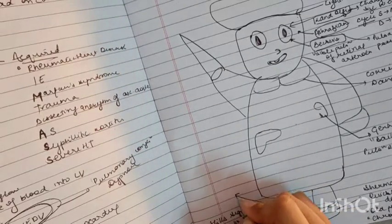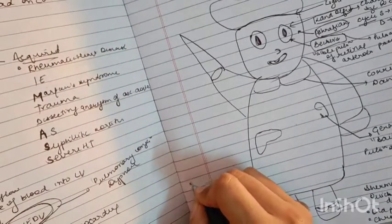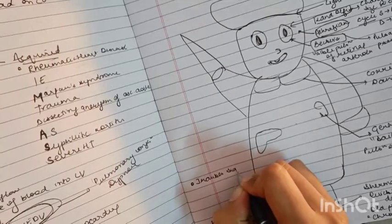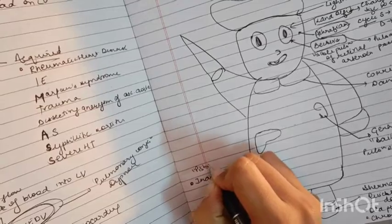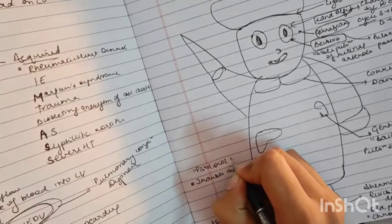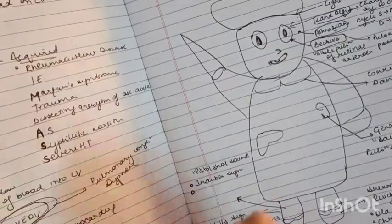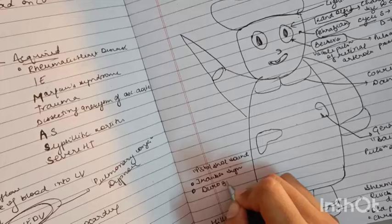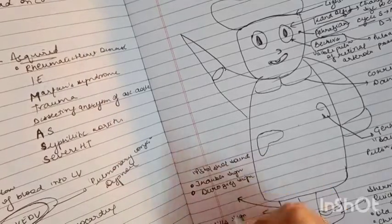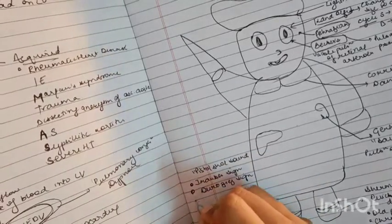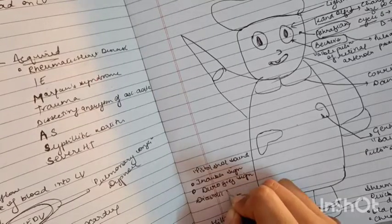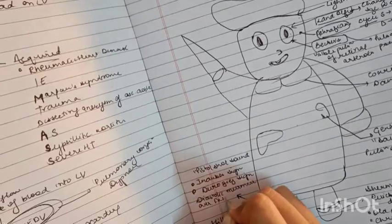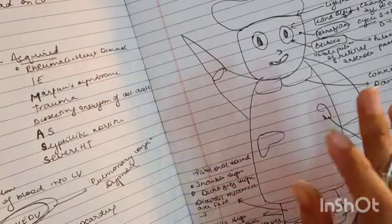Then we are also reminded of one more sign which is Traube's sign. That is pistol shot sounds are heard here. Then one more sign is Duroziez's sign. In this, diastolic murmur is felt over the femoral artery when the bell of stethoscope is pressed against it.